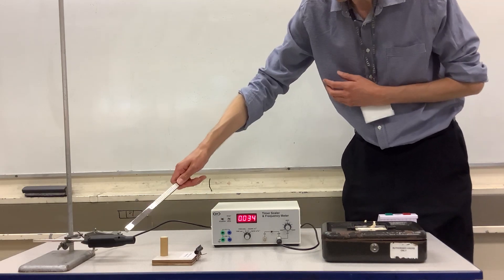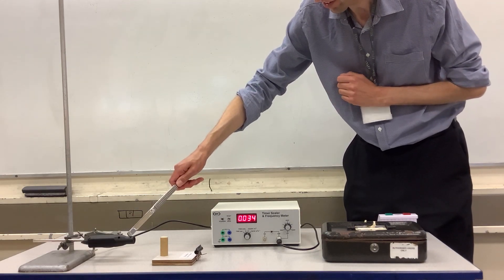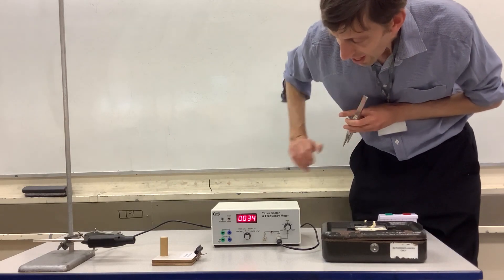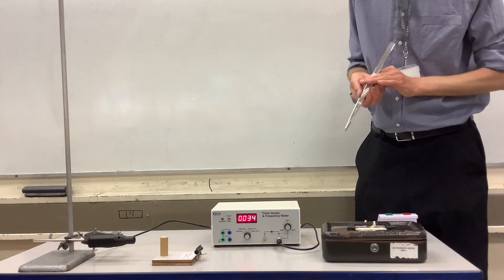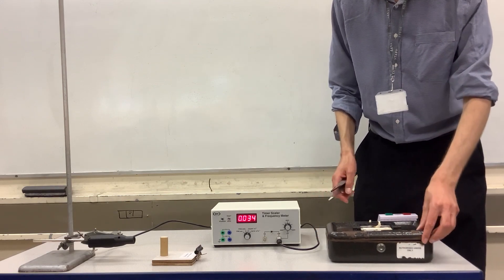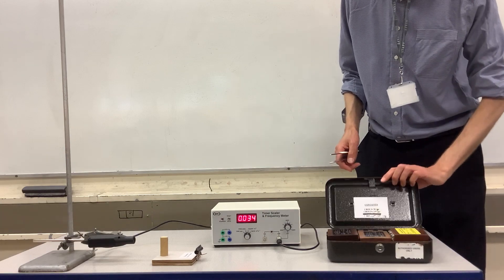Work safely. Here we've got a GM tube which will detect the radiation and it's connected to a counter. At the moment you'll see that occasionally it detects some radiation from the surroundings, which is called background radiation, which we'll study a little bit later in the topic.